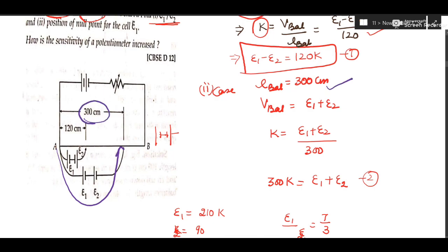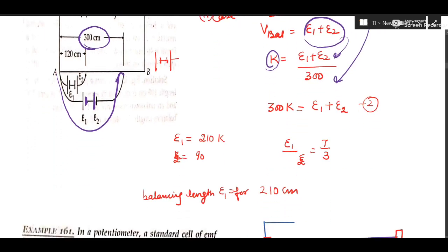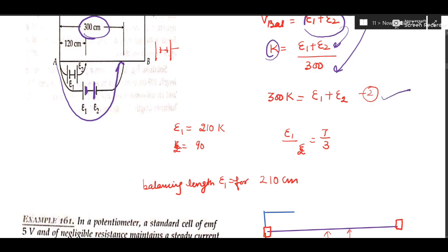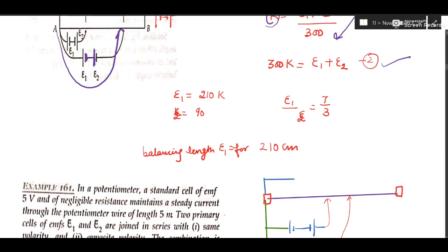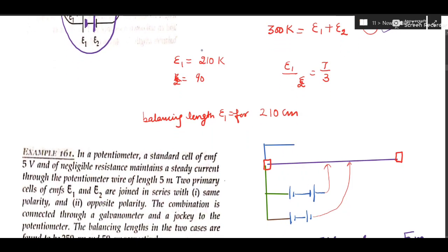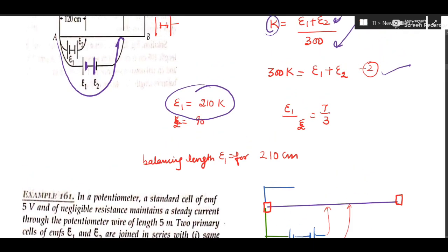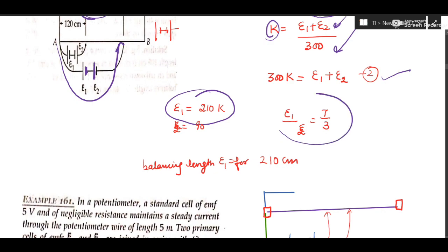In case 2, the balancing length is 300 centimeter. Here opposite polarities are connected — the negative of the first cell is connected to the positive of the second cell — so both cells are supporting each other. The net voltage V_balanced = E1 + E2. Substitute into K = V_balanced / L_balanced to form the second equation. Two equations and two variables E1 and E2 are ready to solve.